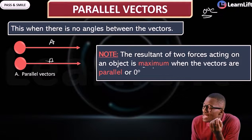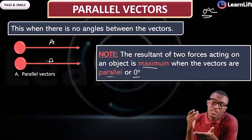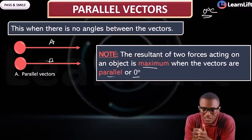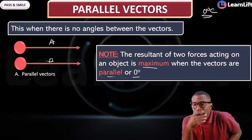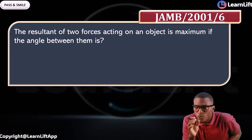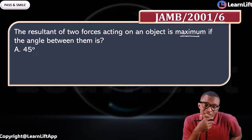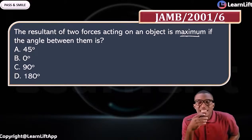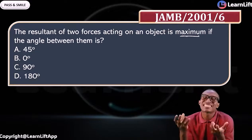Note that the resultant of two vectors acting on an object is maximum when the vectors are parallel, i.e., when the angle is zero degrees. This is a constant JAM and WAEC question. JAM 2001 question 6 asks: 'The resultant of two vectors acting on an object is maximum when the angle between them is?' Option A: 45°, B: 80°, C: 90°, D: 180°. The answer is that parallel vectors with zero degree angle give the maximum resultant.